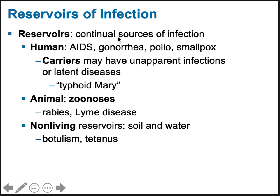A reservoir is a continual source of the infectious agent. It could be human — HIV is only found in humans, as is gonorrhea, polio, and smallpox. When the only reservoirs are human, we have the potential to completely eradicate the disease if we can get everybody vaccinated and stop transmission. We got very close to eradicating polio, and we do consider smallpox to have been eradicated.